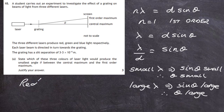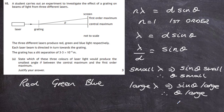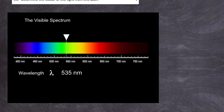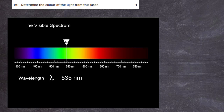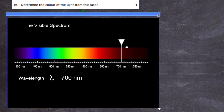We're asked which colour gives the smallest angle θ — red, green, or blue. From our argument, it will be the colour with the smallest wavelength. We know from our knowledge of the visible spectrum that red has the longest wavelength, blue has the shortest wavelength, and green is somewhere in between.